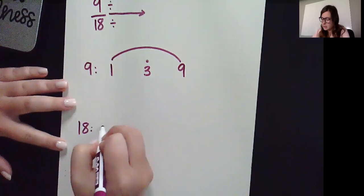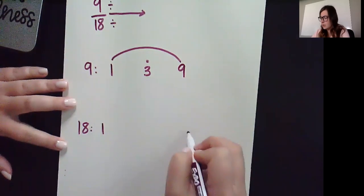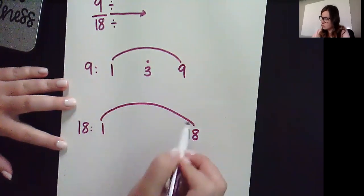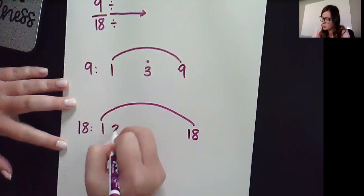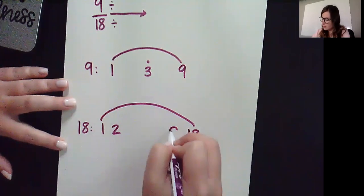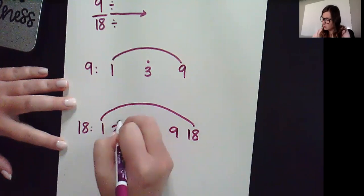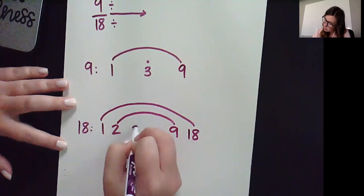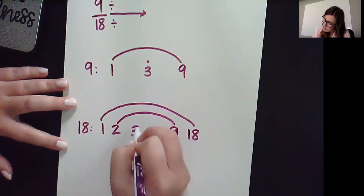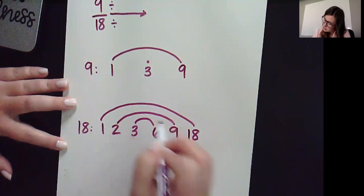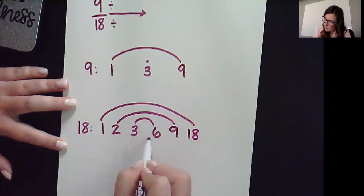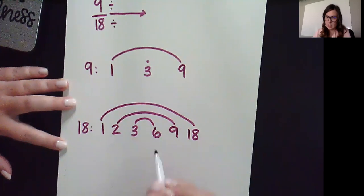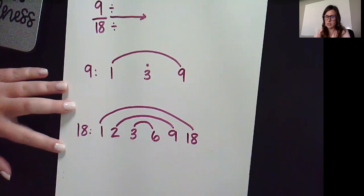For 18, we can do 1 times 18, 2 times 9, 3 times 6, and 4 and 5 don't make 18. So we are done.